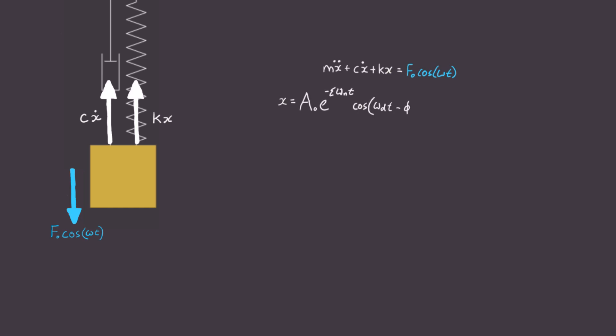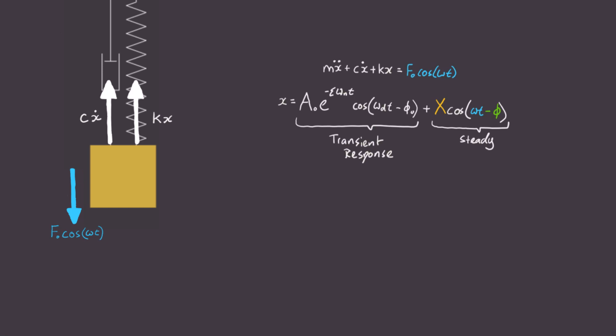It turns out, after solving this, we get the following equation of motion. And notice it consists of two parts. One is called the transient response, which is identical to the equation of motion of the free response from last time. And the other is called the steady state response, which has two important terms, capital X and phi.